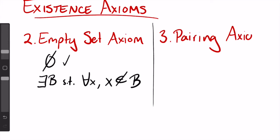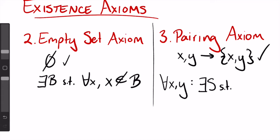Next is the pairing axiom, which states that for any two elements x and y, we can construct a set that contains both of these elements and nothing else. That is, we can construct the set x comma y. In formal terms, we would say, for all x and y, there exists some s such that s equals the set of x and y.